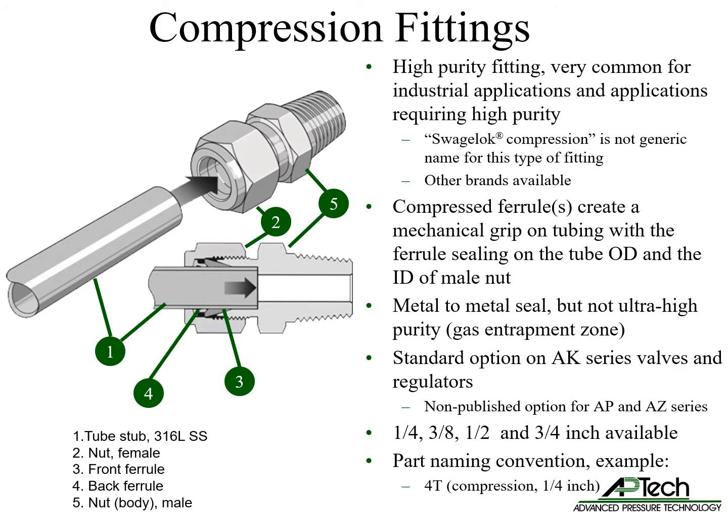Compression fittings are high purity fittings, one step below ultra high purity face seal fittings. They are very common for industrial and other applications requiring high purity. Brands include Swagelok and others — many customers incorrectly refer to compression fittings generically as Swagelok fittings, but there are many brands. The compression fitting mates with a tube stub. There are single and double ferrule methods. Two ferrules are compressed to create a mechanical grip on the tubing, which seals with the male nut inner dimension, forming a metal-to-metal seal, but it is not considered ultra high purity due to its gas entrapment zones.